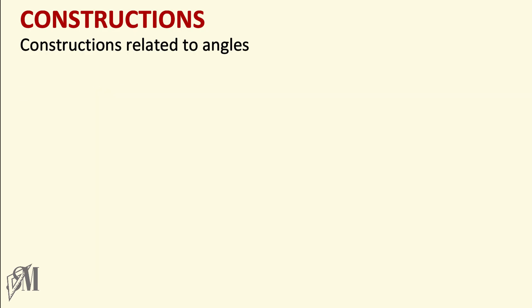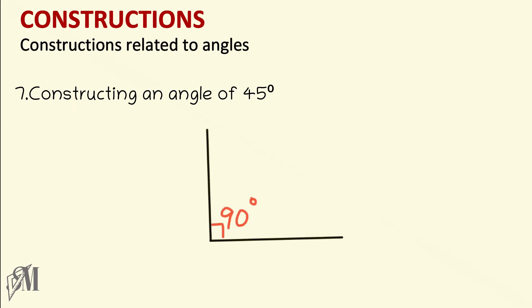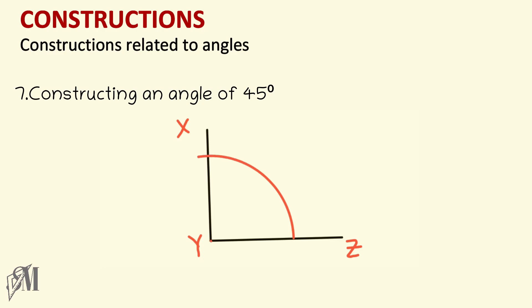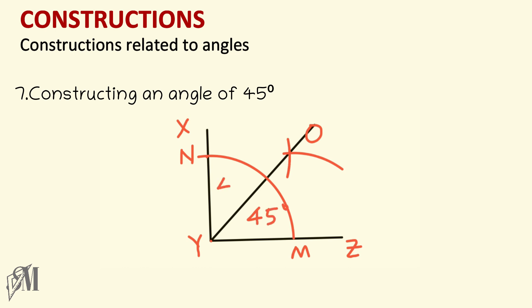The final angle is 45 degrees. Construct a 90-degree angle and name it XYZ. Keep the compass on Y and draw an arc, naming the intersections with the arms M and N. Draw an arc from M, then from N without changing the compass size. Join intersection O to Y. You have bisected the 90-degree angle to get two angles of 45 degrees each. Hope I made myself clear regarding loci and constructions related to angles and straight lines. Hope to see you again — goodbye.